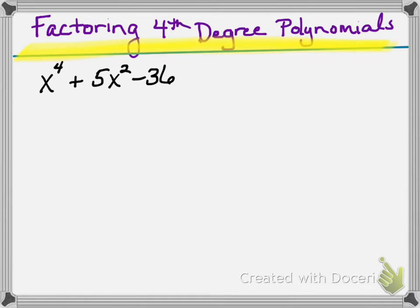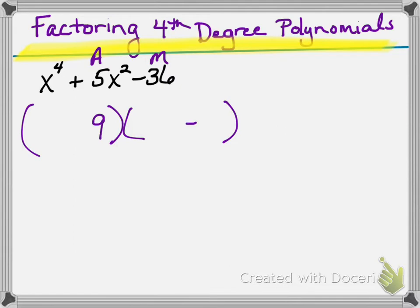The first problem is x to the fourth plus 5x squared minus 36. When we're looking at these, since we have a lead coefficient of 1, we're looking for two factors that multiply to give me negative 36 and add to give me 5. So I'm multiplying to get negative 36 and adding to get 5. Hopefully you're thinking of 9 and negative 4.